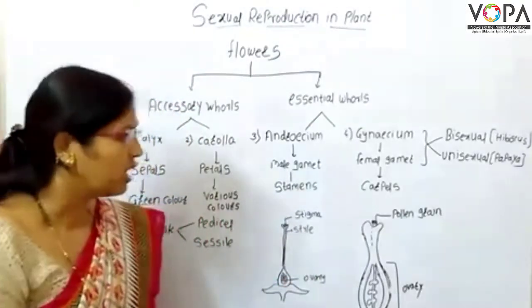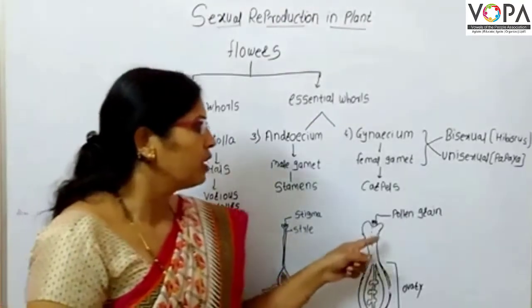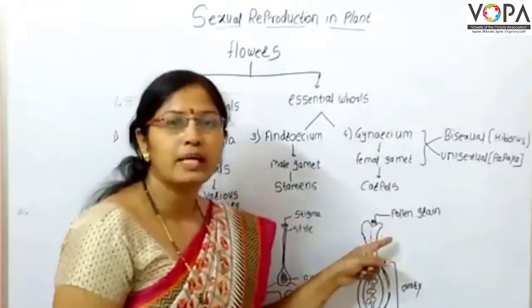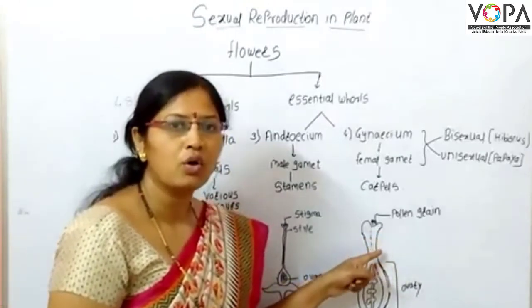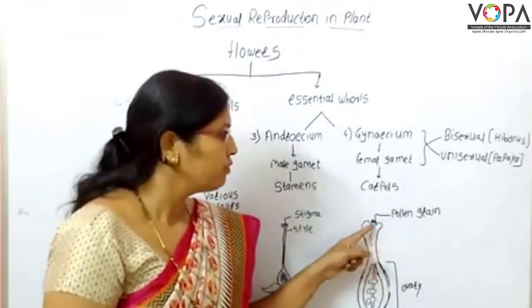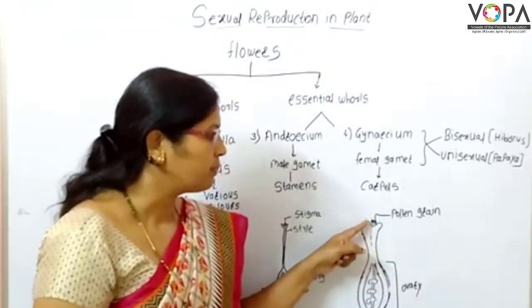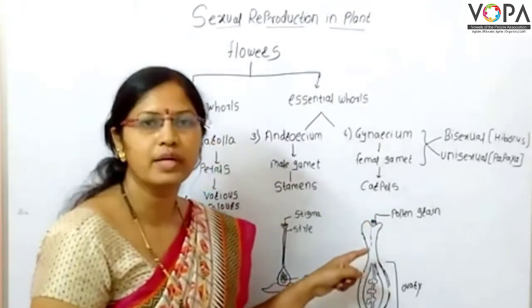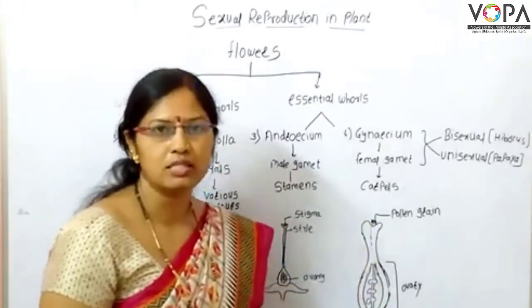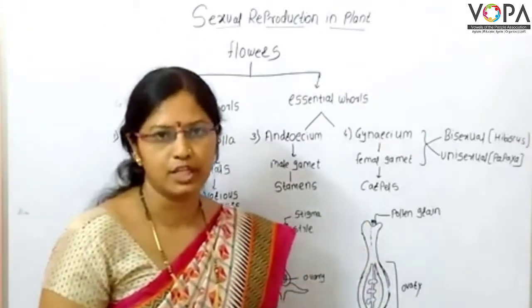The transfer of pollen grains from the stamen to the stigma of the ovary is called pollination.